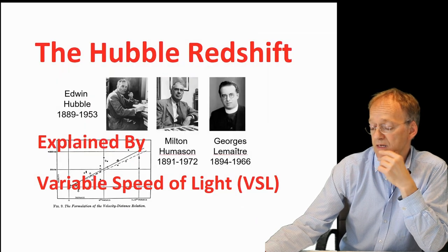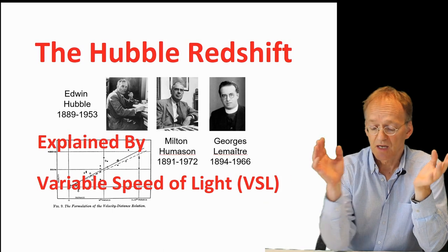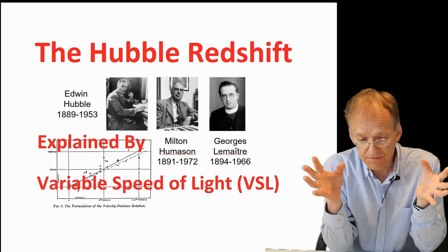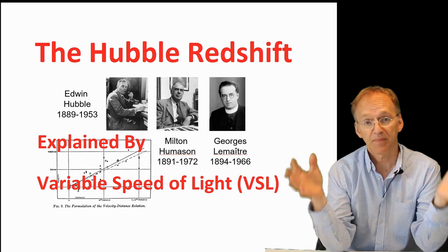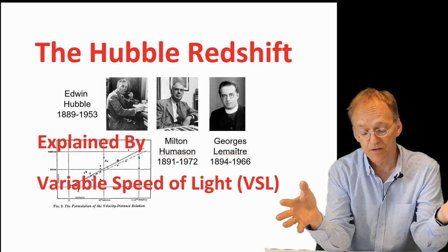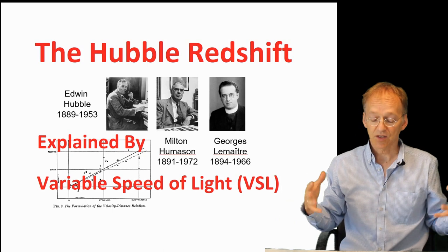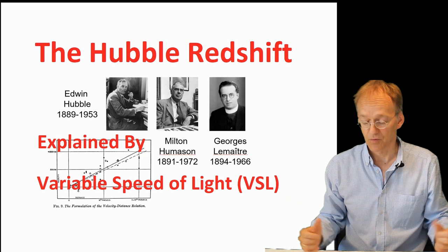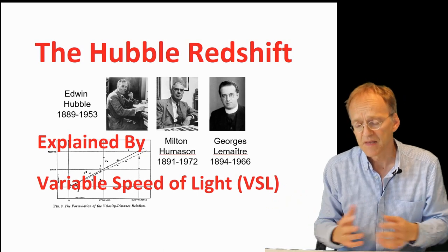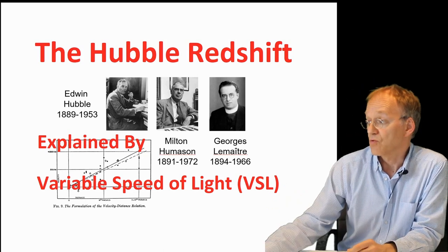So the explanation of the Hubble redshift is basically that there is no material expansion, there is no expansion of the universe, just a contraction of length scales. The expansion is illusory, if you want. Why this? Why do length scales contract?